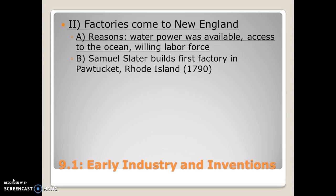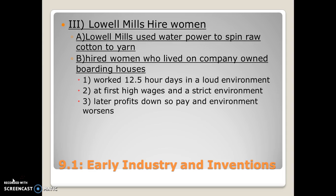The first factory was built by Samuel Slater in Pawtucket, Rhode Island, in 1790. From there, we talk about the Lowell Mills — a group of mills created to spin raw cotton into yarn. What makes the Lowell Mills interesting is that it was an all-women factory; only women were allowed to work there. These women lived on company property in boarding houses, which was actually quite progressive at the time.